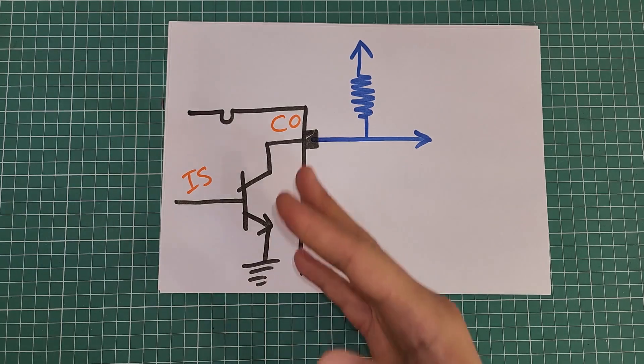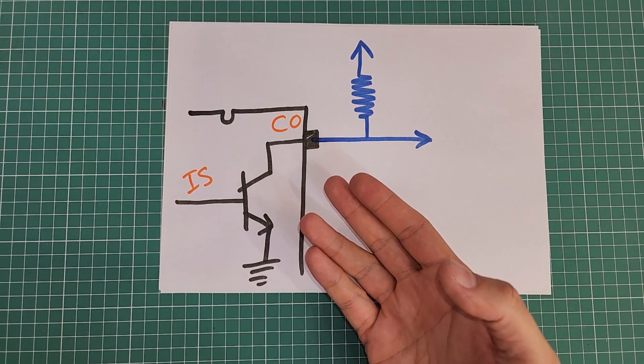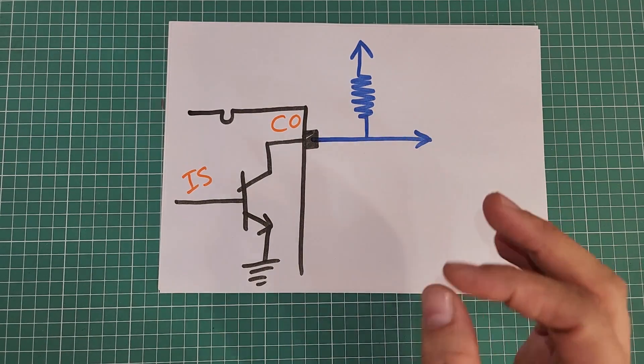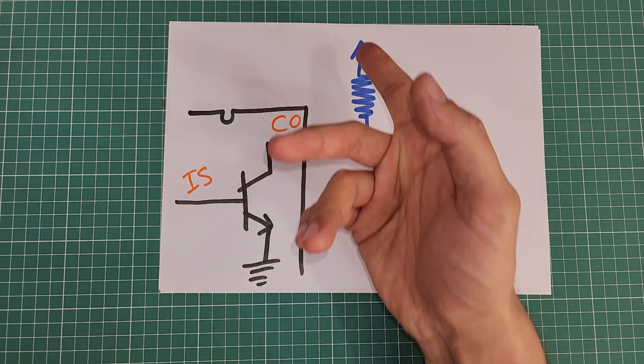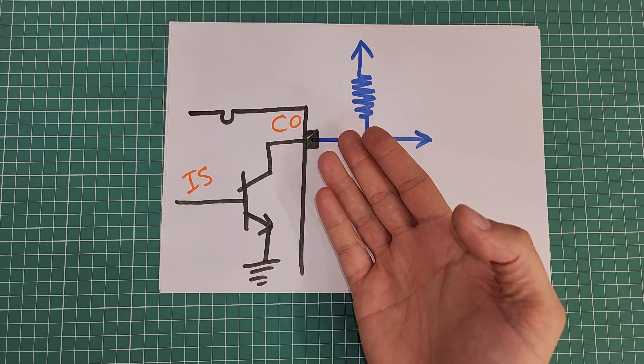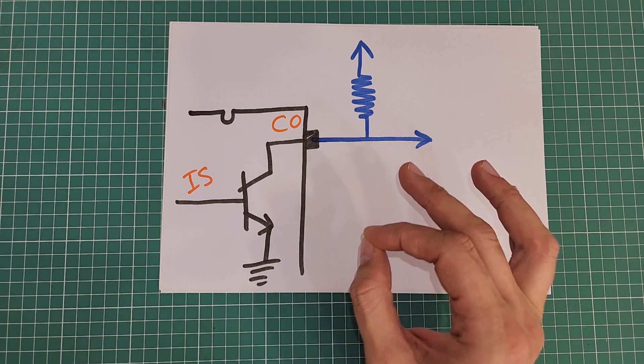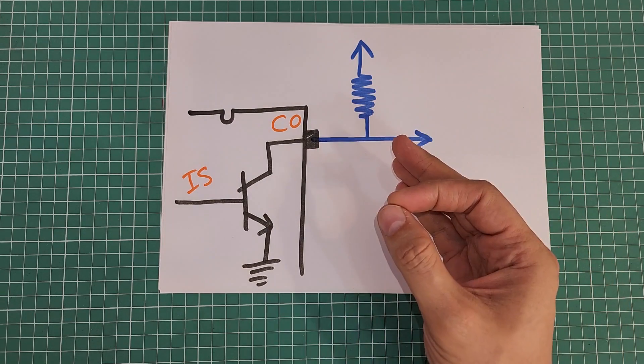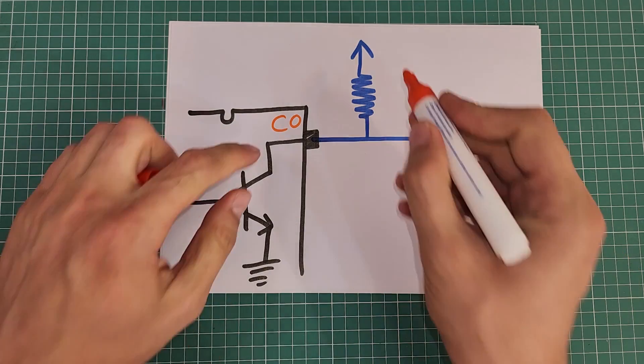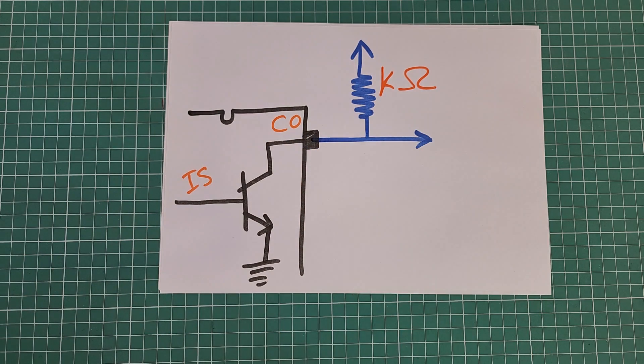If open collector outputs are so good, why aren't all outputs made as open collector? Because they have some disadvantages. These output types require external components — at least a pull-up resistor is required, while TTL outputs need no external components. This pull-up resistor consumes energy and draws current when the output is at 0V. Higher operating speeds require a lower resistor value for faster pull-up, which consumes even more power. In most cases a resistor in the kilo-ohm range is used to reduce power dissipation, but this results in slow operation. I2C protocol is one well-known example of open collector application in practice.